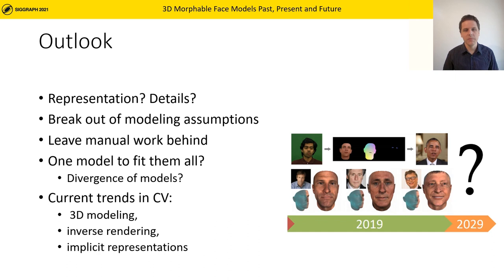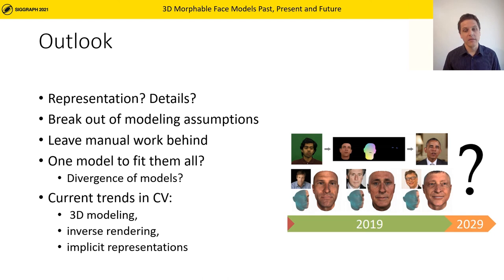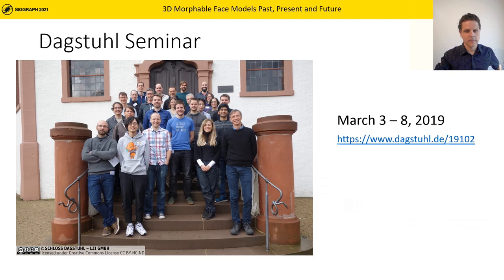We are currently seeing a shift towards learned models. Will we be able to keep disentangled and interpretable representations? What will be the representation? How will we handle details? Will we be able to have one model to cover all various use cases, or will the divergence of models we observe today continue? We currently see strong trends in the computer graphics and vision community towards 3D modeling, implicit representation, and inverse rendering, and we are convinced that some ideas behind 3D morphable models will contribute to this shift.